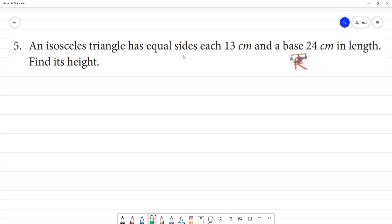An isosceles triangle has equal sides each 13 cm and a base 24 cm in length. Find its height.